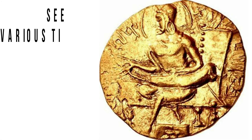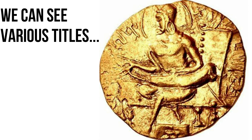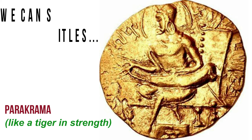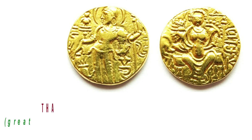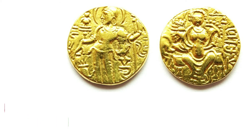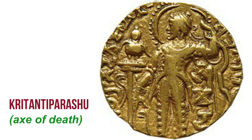Various titles were used by Samudra Gupta, for example Parakrama meaning tiger-like in strength, Apratiratha meaning great warrior, and Kritantaparashu meaning axe of death.